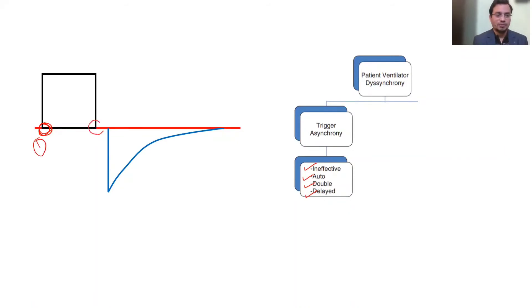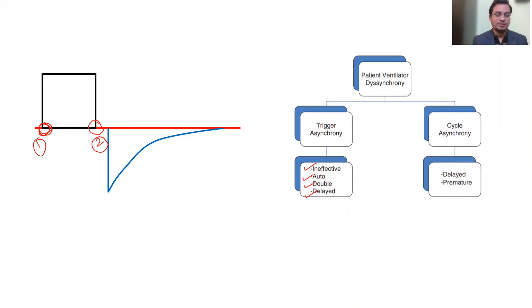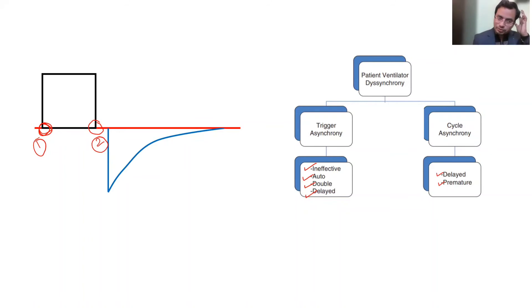A second type of dyssynchrony occurs at cycling off — the termination of the breath — termed cycle asynchrony. Cycling means inspiration is changing to expiration. Two types are described: delayed cycling, where the patient's neural inspiratory time (TI) is less than the ventilator TI, so the ventilator continues providing inspiration beyond the patient's need; and premature cycling, where termination occurs earlier than desired.